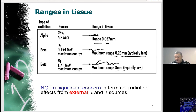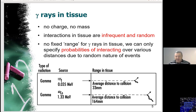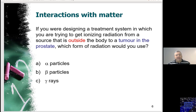There is no significant concern from alpha and beta radiation coming from external sources. Gamma rays, on the other hand, are not charged, have no mass, and their interaction with tissue is infrequent and random — a probabilistic phenomenon with no fixed range. They penetrate an average distance of 33 millimeters up to 16.4 centimeters, depending on the energy of the source, which is far further than alpha and beta.